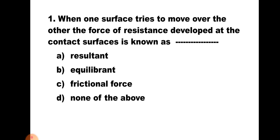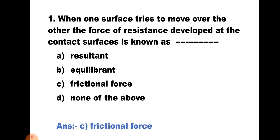Question number one: When one surface tries to move over the other, the force of resistance developed at the contact surfaces is known as — a) Resultant, b) Equilibrium, c) Frictional force, and d) None of the above. When one surface tries to move over the other, the resistance developed is a force of friction. Hence the correct answer is c) Frictional force.